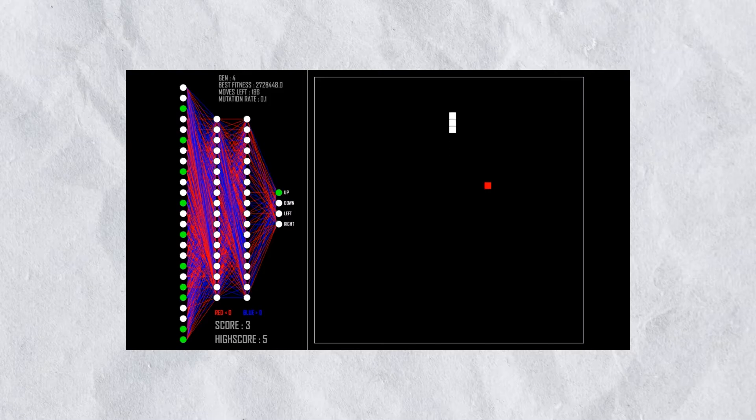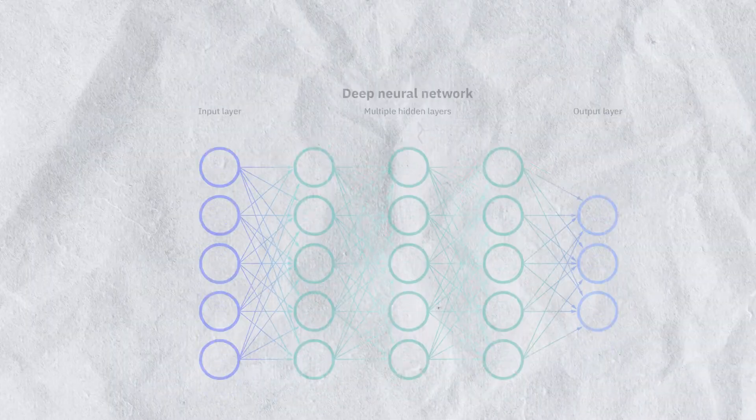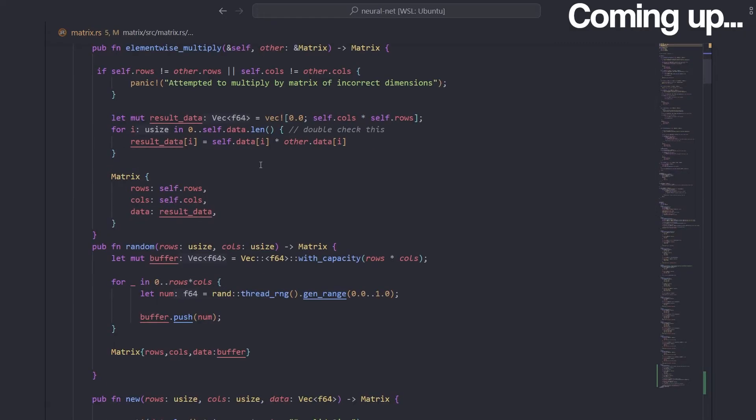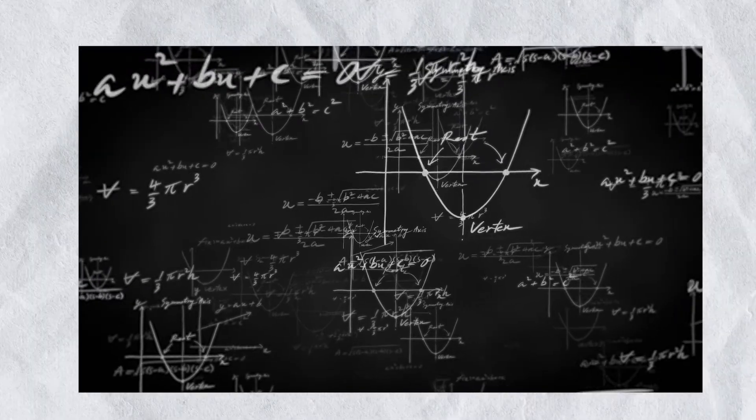Like all things, in order to understand them, we must climb down the layers of abstraction and arrive at the foundations. For machine learning, it's the neural network. At the end of this video, you will understand how to program your very own neural networks in Rust to solve problems, and also a bit about the mathematical foundations of how it all works.